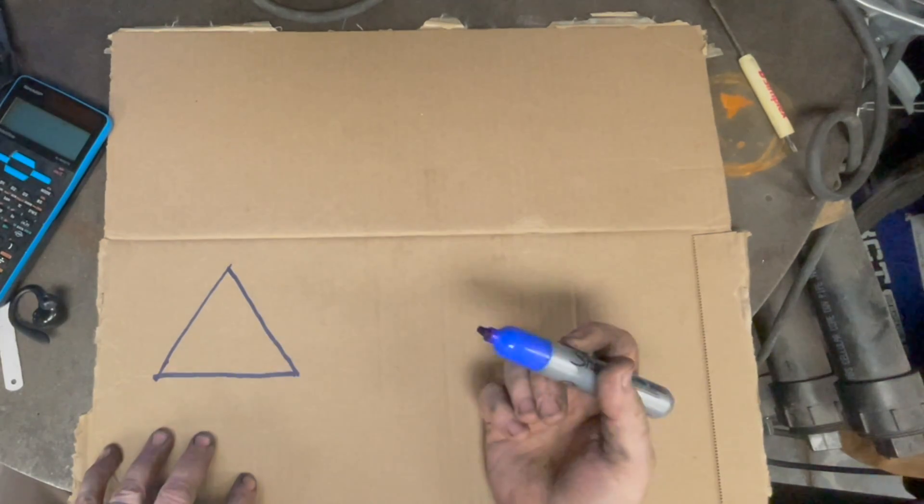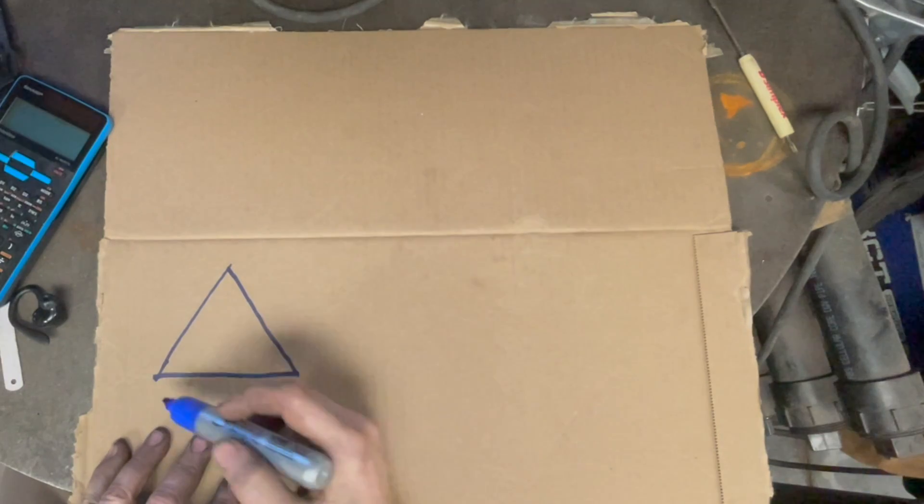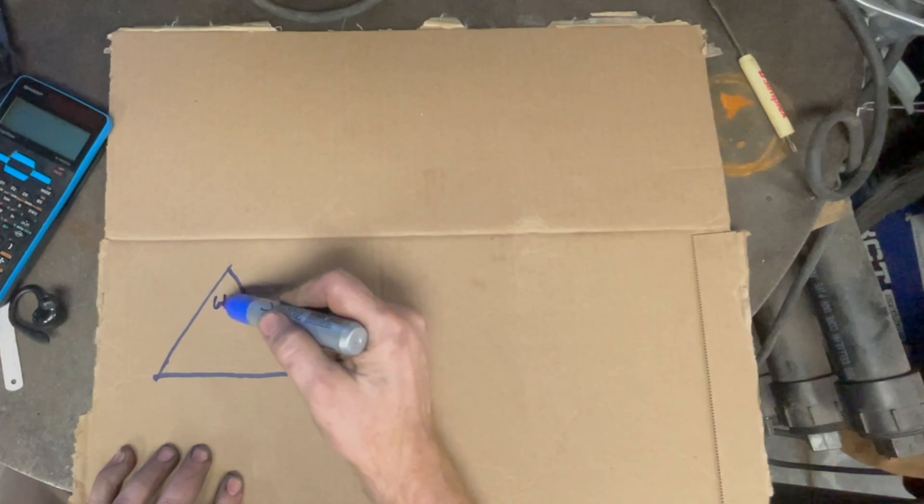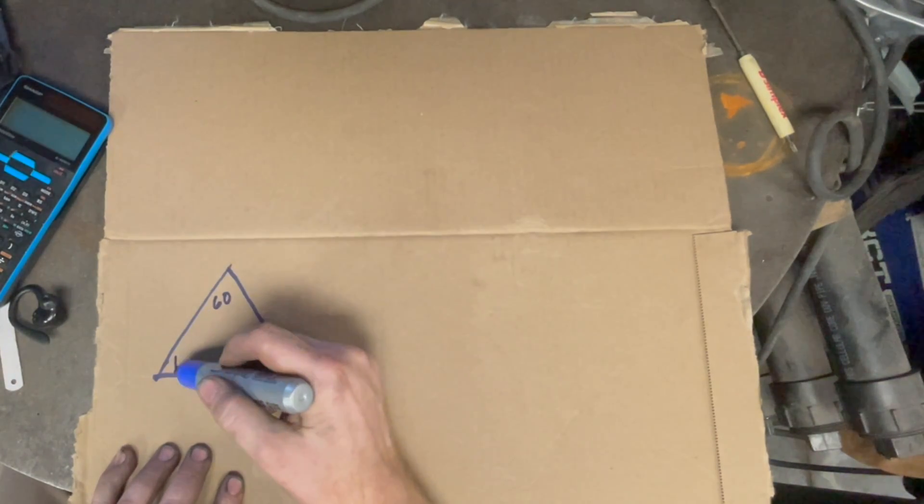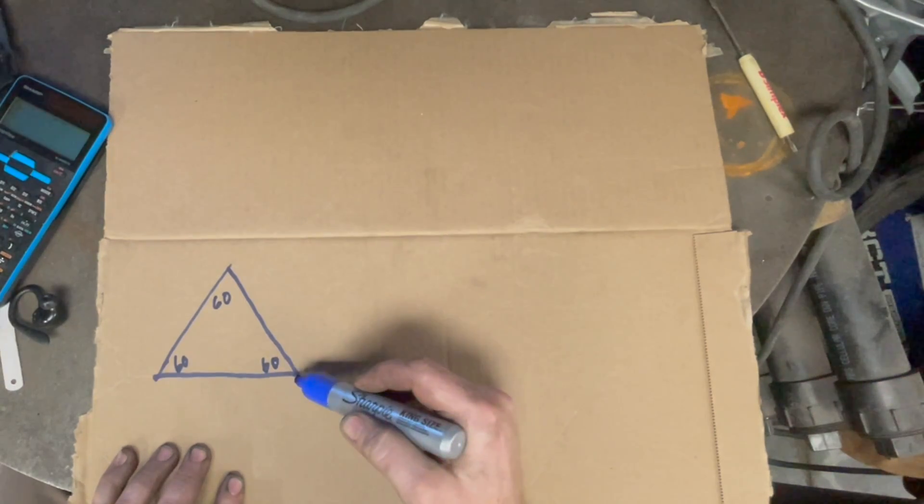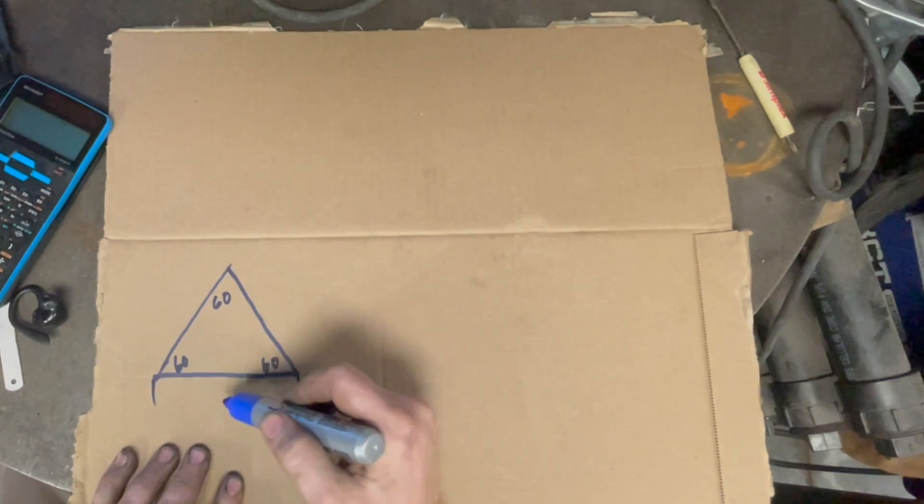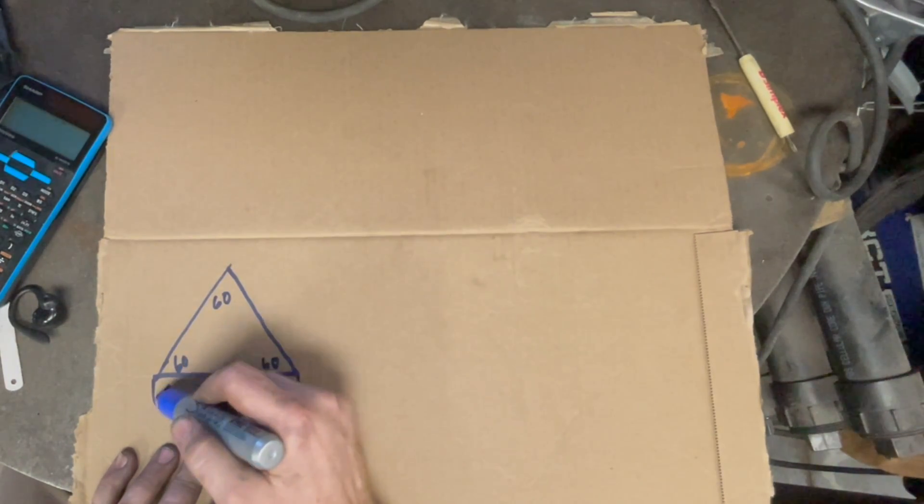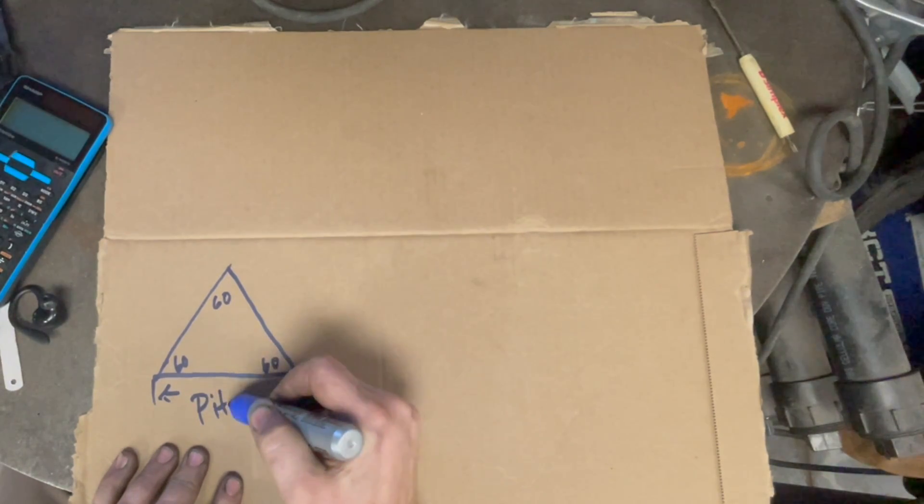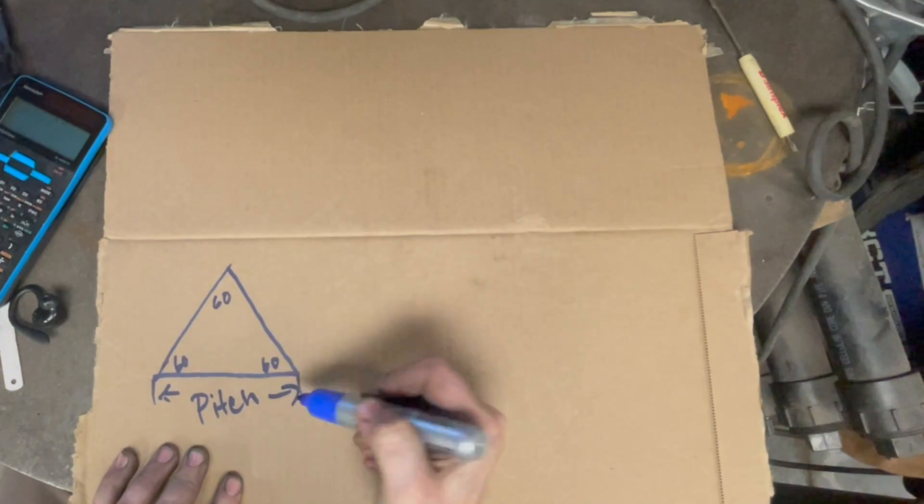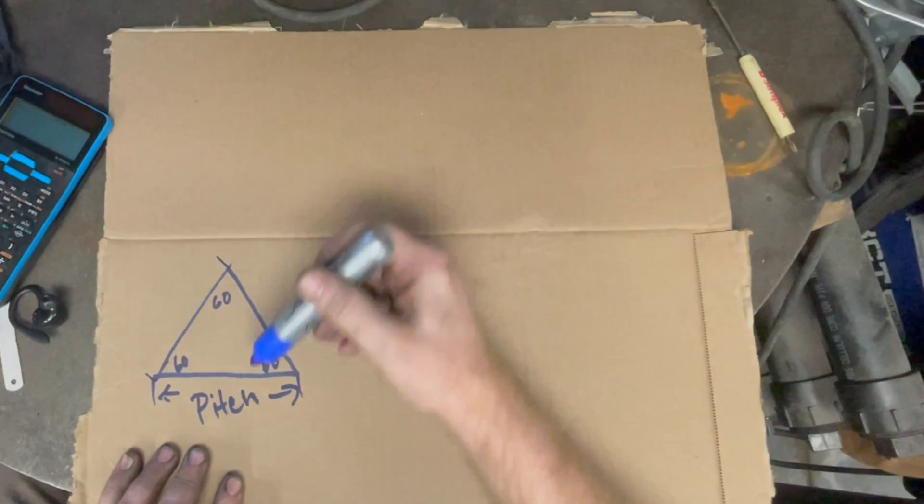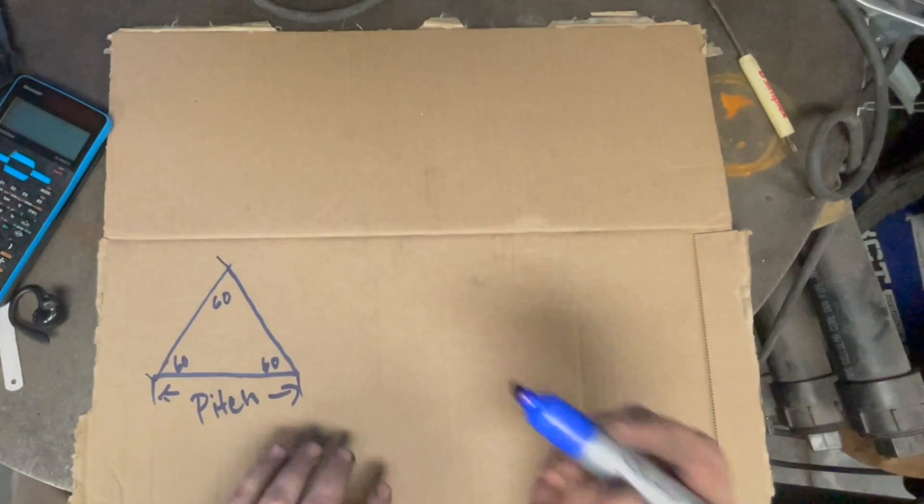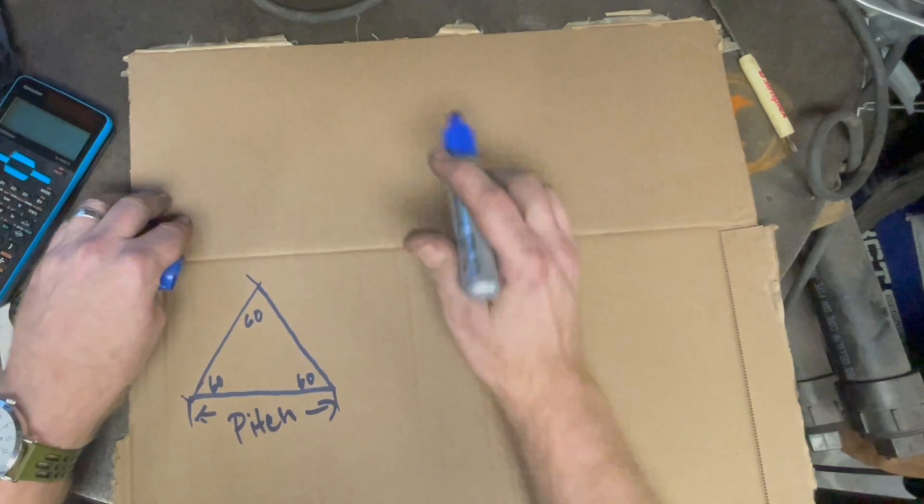The next thing we're going to want to know is how deep to make our threads. A thread is basically a triangle. You got your cutter which is 60 degrees, and it's an equilateral triangle. This is also 60 degrees and this is 60 degrees. By that, we know that each one of these sides is equal, and this measurement here is our pitch. Just like so, and that also means that this equals that and this equals that. So if we know our pitch, we know all the sides of the triangle.